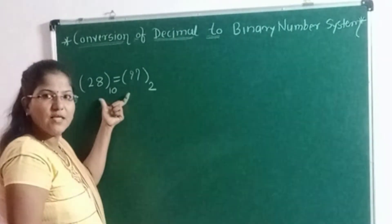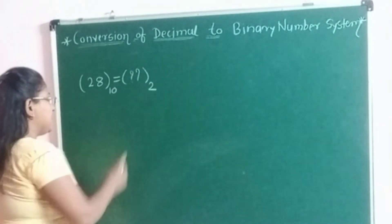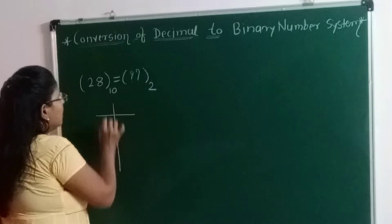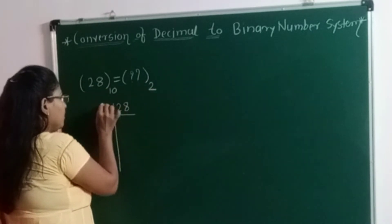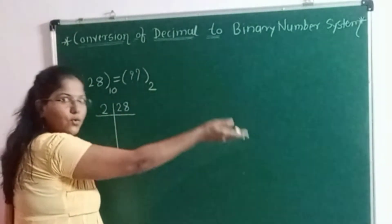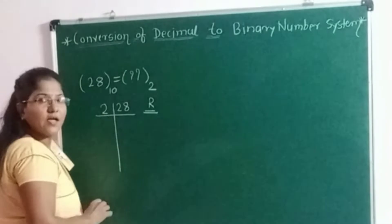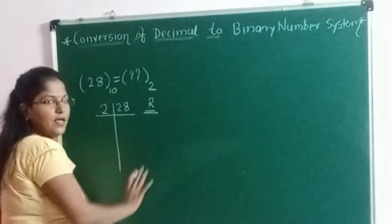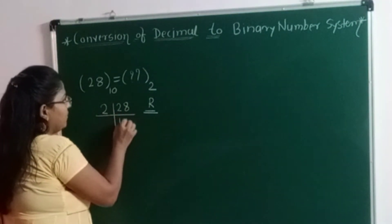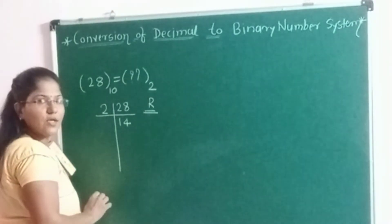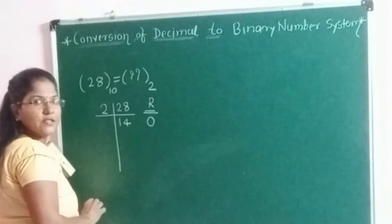Now I will explain with the help of this example how to convert the given decimal to the binary. Draw the structure like this, write the given decimal number here, and we have to divide this number by 2 as we are going to convert it into binary. Here we will also keep track of the remainders. Divide 28 by 2 — we will get the quotient as 14 because 28 is completely divided by 2, so the remainder will be 0.